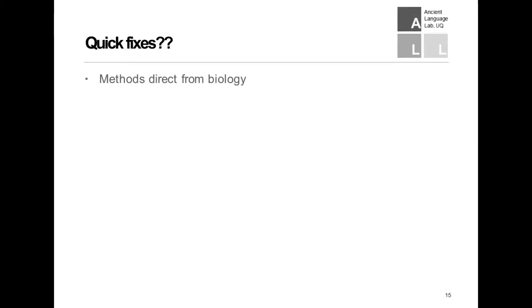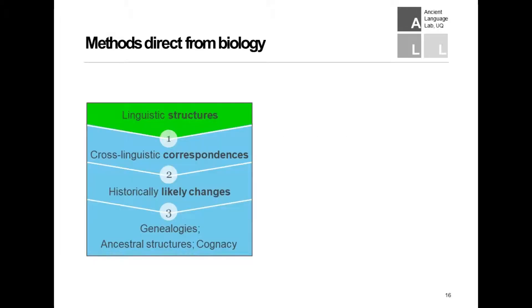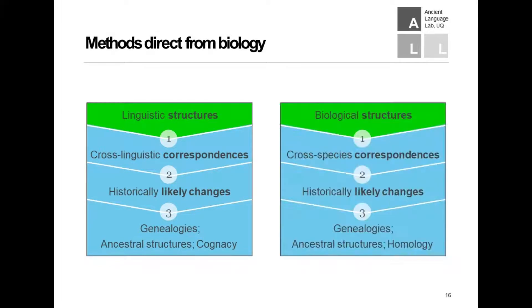It's obvious that ideally we'd like to move faster. So let me first dispense with what might appear to be some quick fixes — easy solutions that wouldn't require too much work. I'll go through four of them: importing methods directly from biology, current lexical phylolinguistics, computational tools that run sound changes forward in time, and phylophonотactic phylogenetics.